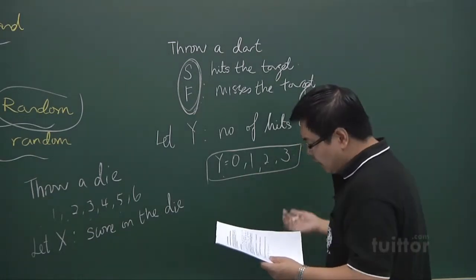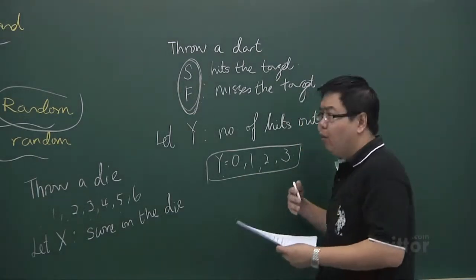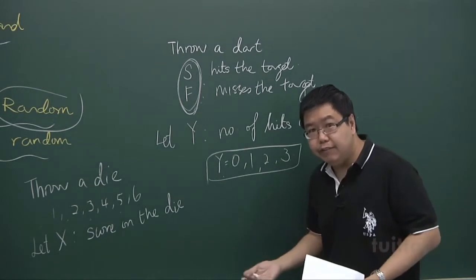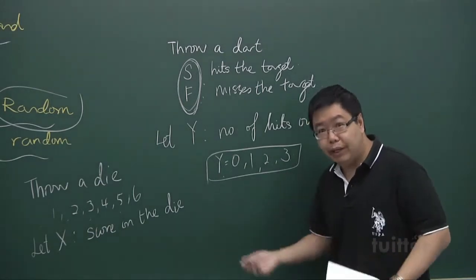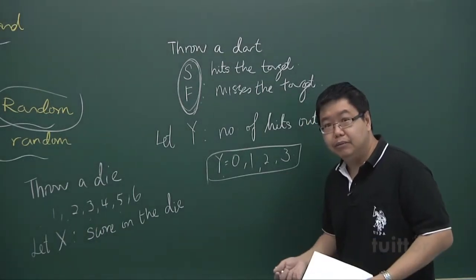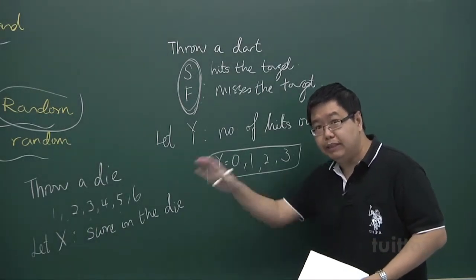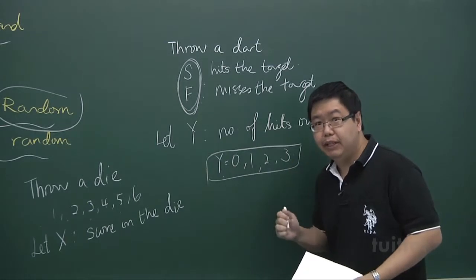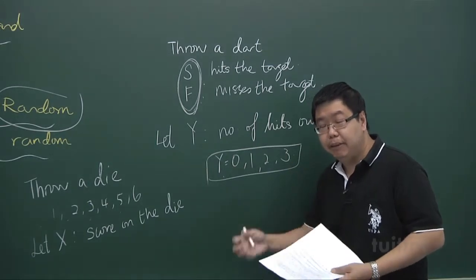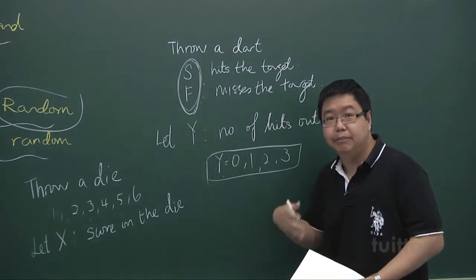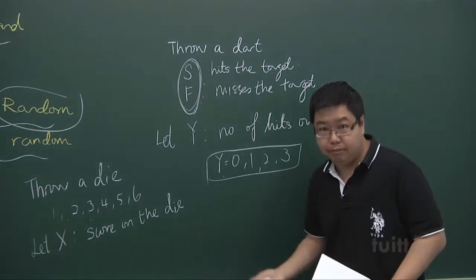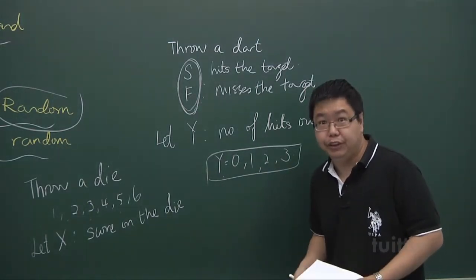Things like the weight of an individual is also a random variable, because it goes by chance. When I select a person randomly, the person's weight is a chance situation.